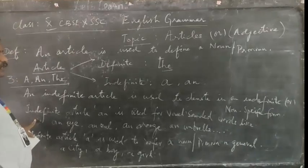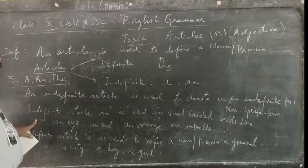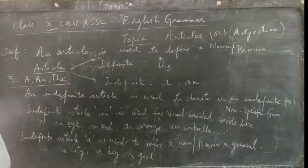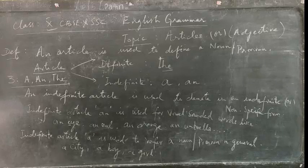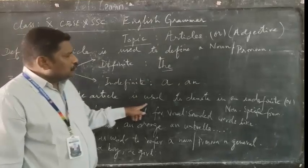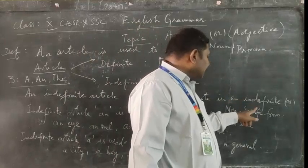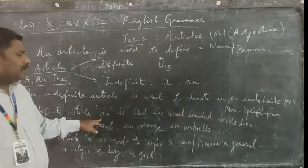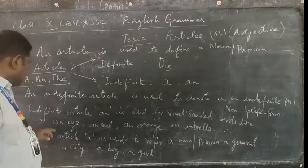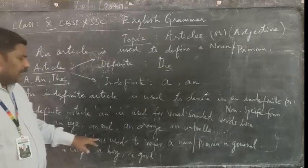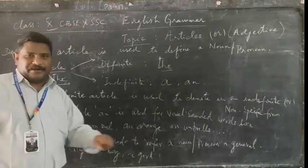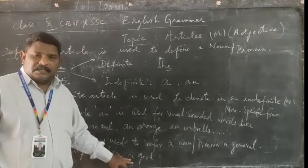Whereas indefinite article AN is used exclusively for vowel-sounded words only. The examples we have already given: an article is used to define a noun or a pronoun. Articles are classified into definite and indefinite articles. THE is the definite article; A and AN are indefinite articles. AN is used for vowel sounds, and A is used to refer to a noun in general — for example, a city, a boy, a girl, and so on.